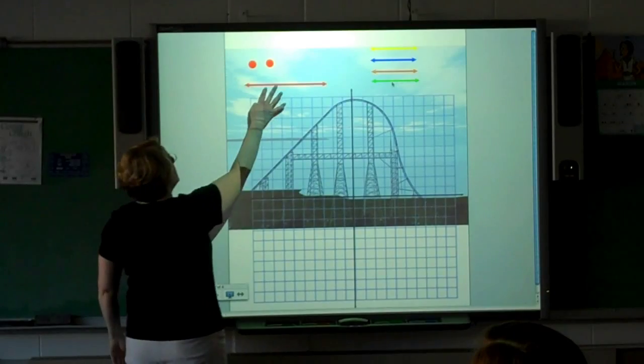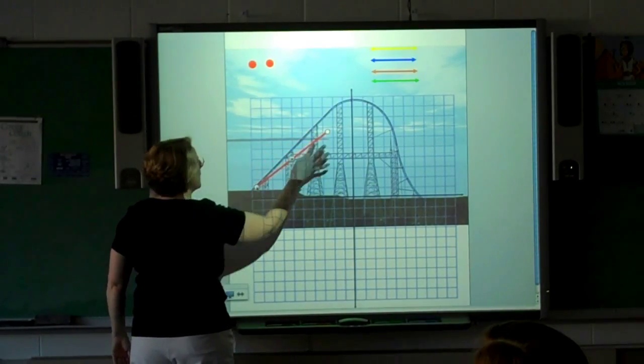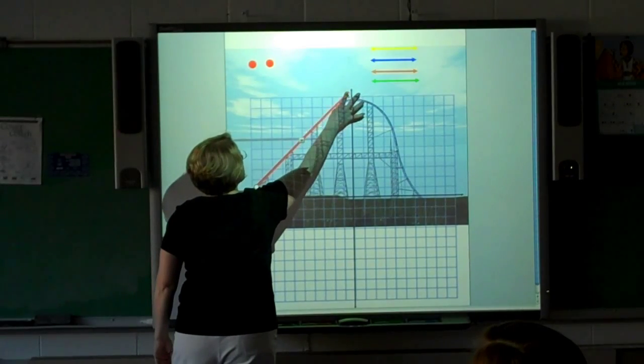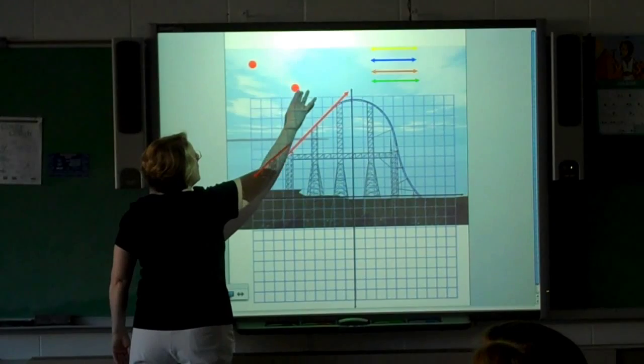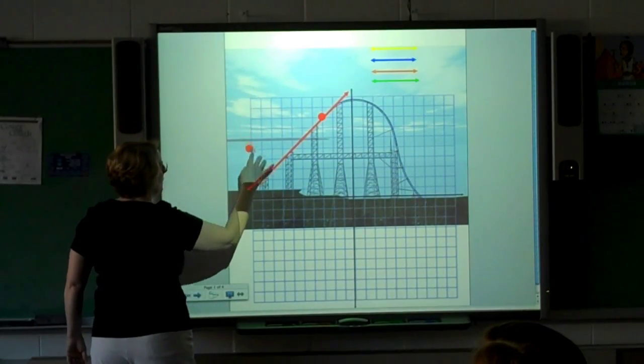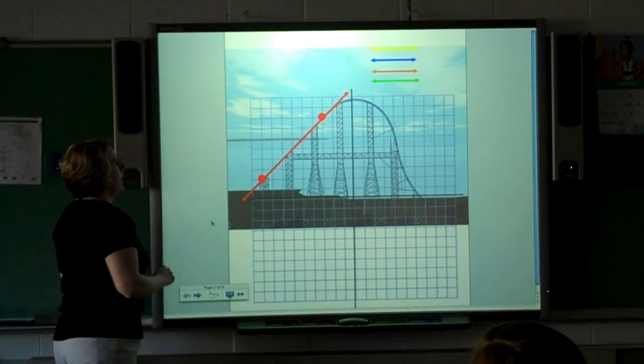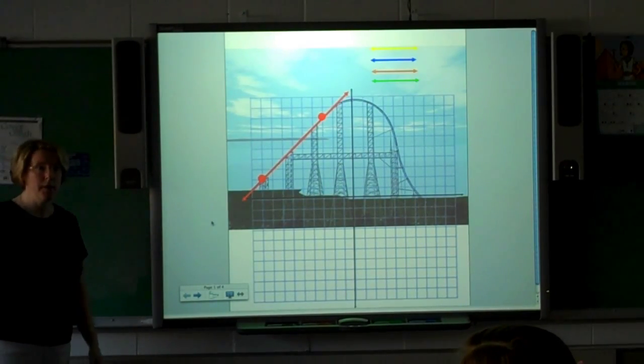So if I were to actually take my line and place it on top of the roller coaster track, like this, and then if I were to take two points on the graph paper itself, I could actually find the actual slope. So let's go ahead and do that. Alright, so how do you find the slope when you have two points on a line? What's the formula? Anybody remember?